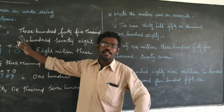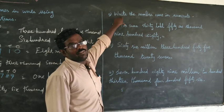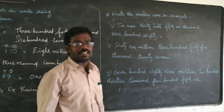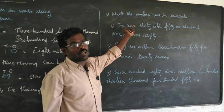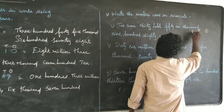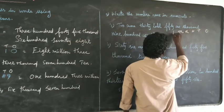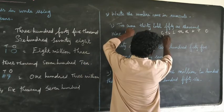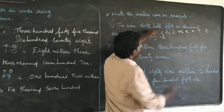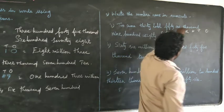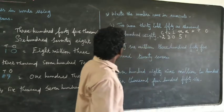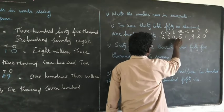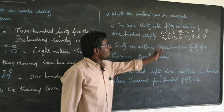In this question, numerals are given and we write in words. In the next question, words are given and we find the numerals. Two crores, thirty lakhs, fifty-one thousand, nine hundred and eighty — that is the Indian system. Write the place values: ones, tens, hundreds, thousands, ten thousands, lakhs, ten lakhs, crore. How many crores? Two crores — write 2. Thirty lakhs — write 30. In Indian system, put the commas after 3 digits, then 2 digits, then 2 digits.